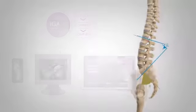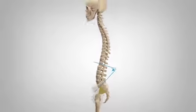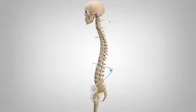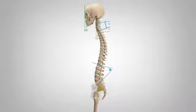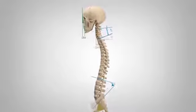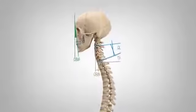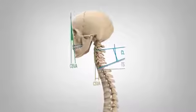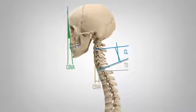But spinal regions do not operate independently. Both cervical and thoracolumbar alignment depend heavily upon one another. Early data suggests that cervical alignment may be just as important for lasting patient outcomes. Cervical alignment matters.